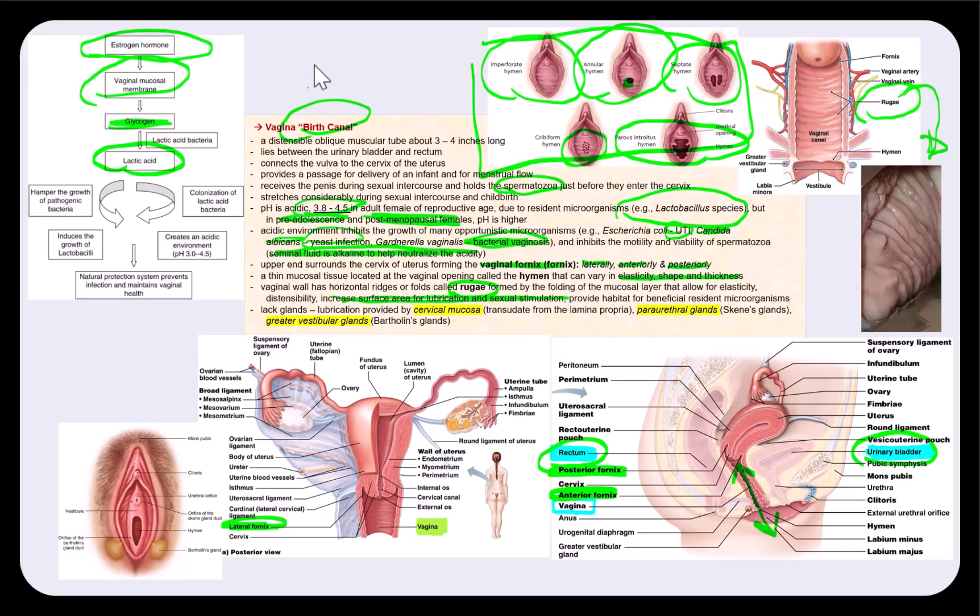The vagina itself does not contain any glands. So the lubrication during sexual intercourse will be primarily provided by the cervical mucosa, the periurethral glands, and as well as the greater vestibular glands. They begin secretion upon sexual arousal.